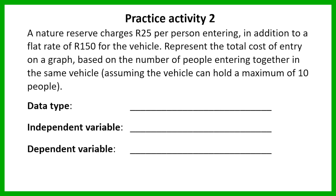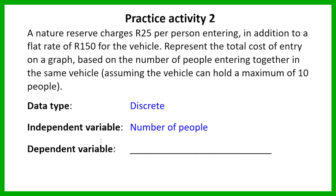The data type in this example is discrete data, because you're counting the number of people going in. You're not going to have half a person going into the nature reserve — you can't have anything between one and two people. So it is discrete data. The independent variable is the number of people entering the nature reserve, and the dependent variable is the cost, because the cost depends on the number of people entering. The number of people is not affected by the cost, but the cost depends on the number of people.